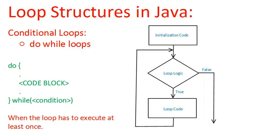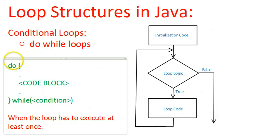The do-while loop is particularly useful when the loop has to execute at least once. I really like using this loop structure if I'm doing something such as asking the user to input an age, but I want to check to make sure they're entering something greater than zero. They have to enter an age at least once before it goes on. The nice thing about the do-while loop is that it's always going to enter the code block at least once, and it checks the condition at the very end.